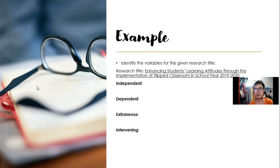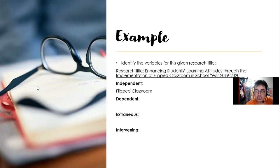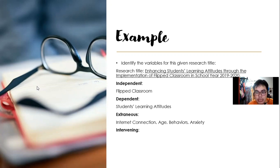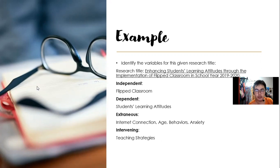Here is an example: 'Enhancing students' learning attitudes through the implementation of flipped classroom in school year 2019 to 2020.' The independent variable is the flipped classroom, because it controls the circumstances and can bring changes to learning attitudes. The dependent variable is the students' learning attitudes — it is the result of the flipped classroom, whether they improve or not. The extraneous variables include absences, age, behaviors, and anxieties — these are not mentioned in the title but can damage or promote the independent and dependent variables. The intervening variable is the teaching strategies, because even in a flipped classroom, teaching strategies are still needed, such as teaching online and uploading videos.